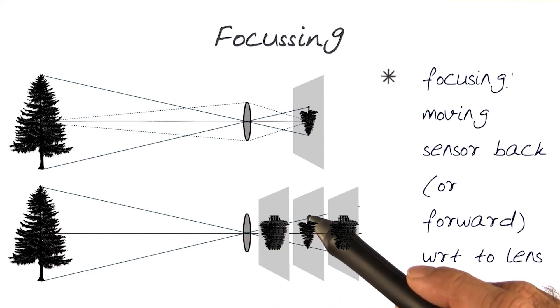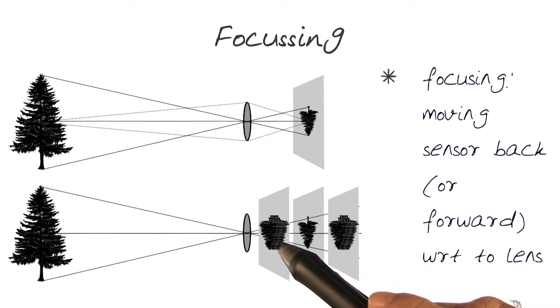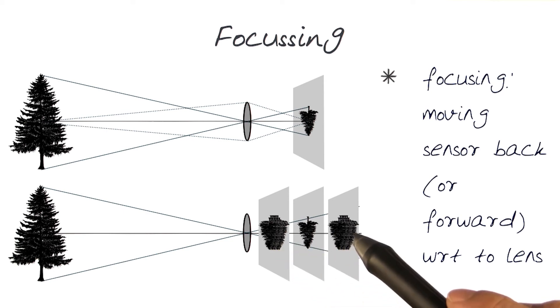In doing so, we guarantee that the image will be crisp and focused on the image plane. If the sensor or image plane is in front of the focal plane or behind it, you'll get a blurry image.